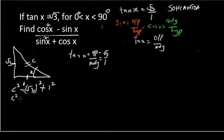So that C squared will be equals to root 3 squared, that's 3, plus 1, that's 4. So to find C, C will be equals to the square root of 4. We'll take the square root of both sides, which is equals to 2. So C is equals to 2.